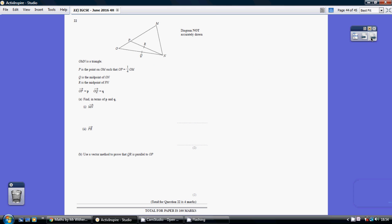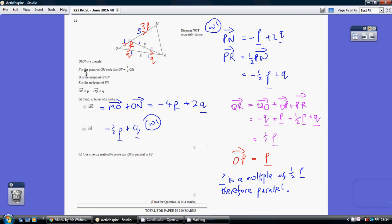Question 22. Let's fill in this additional information first. We're told that P is the point on OM such that OP is a quarter of OM. So if we let OP be 1, then P to M must be 3, because then OM is 4 and OP is 1. Make sure you're okay with where that 3 came from.